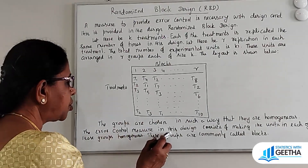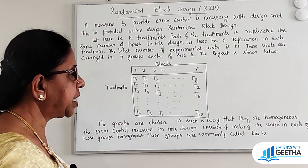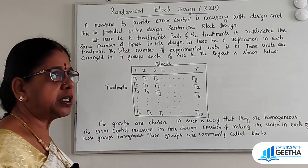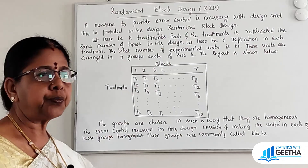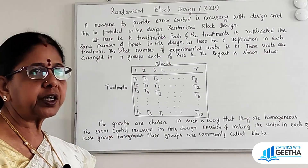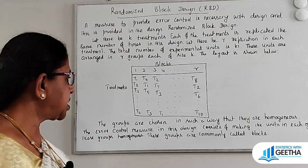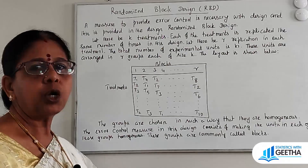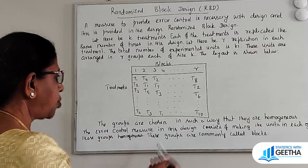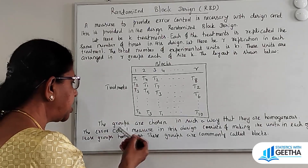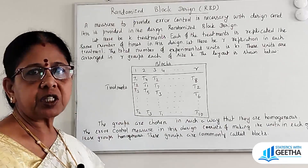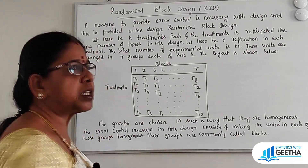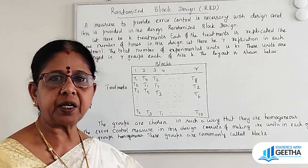The error control measure in this design consists of making the units in each of the groups homogeneous. The experimental units are homogeneous. These groups are commonly called blocks.